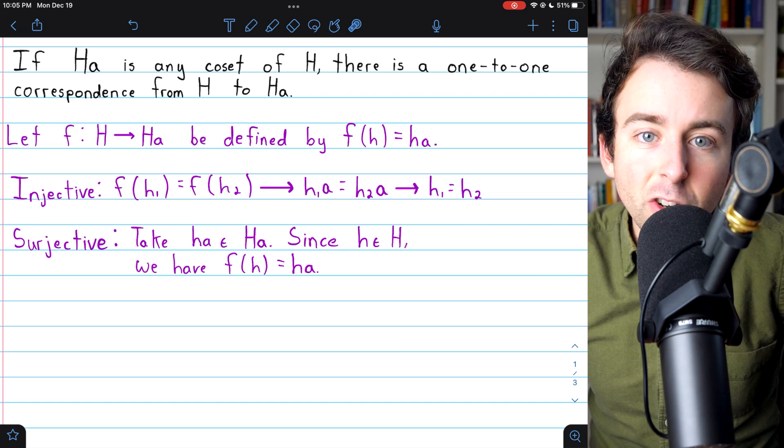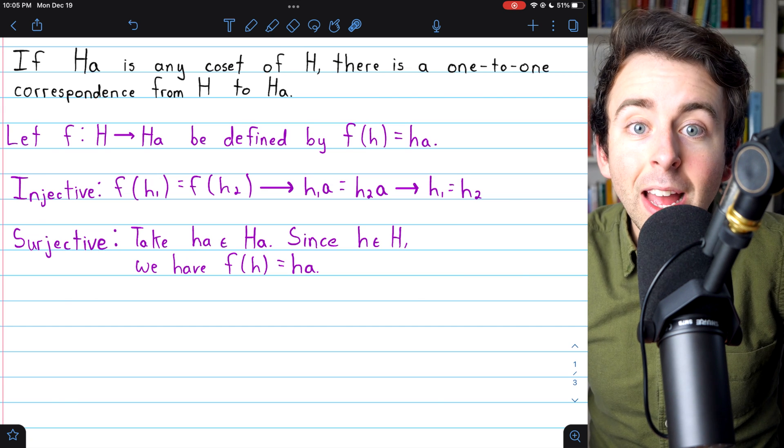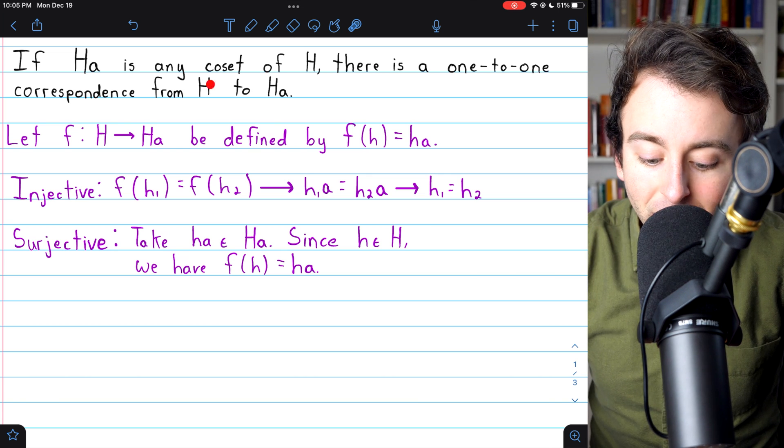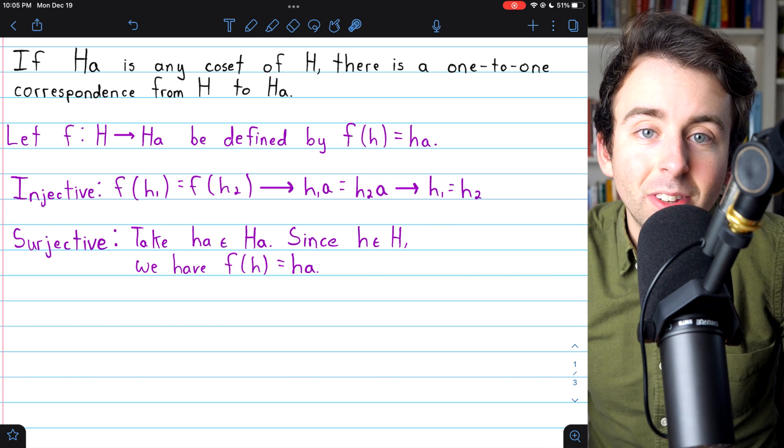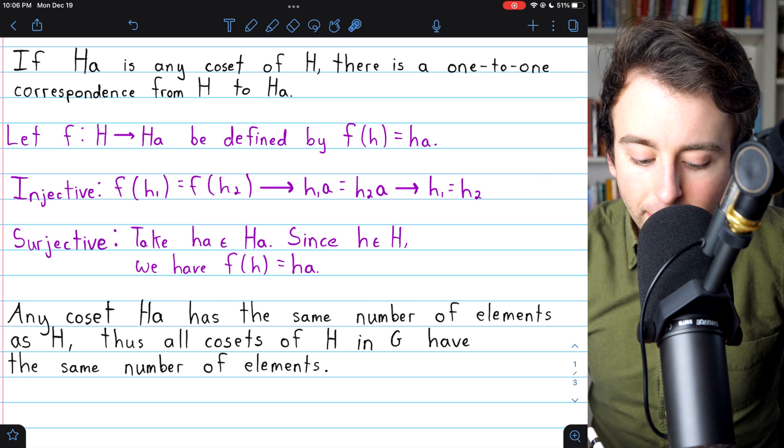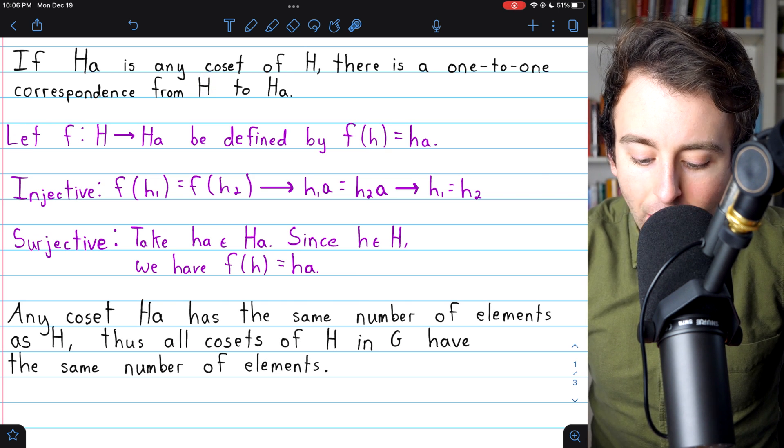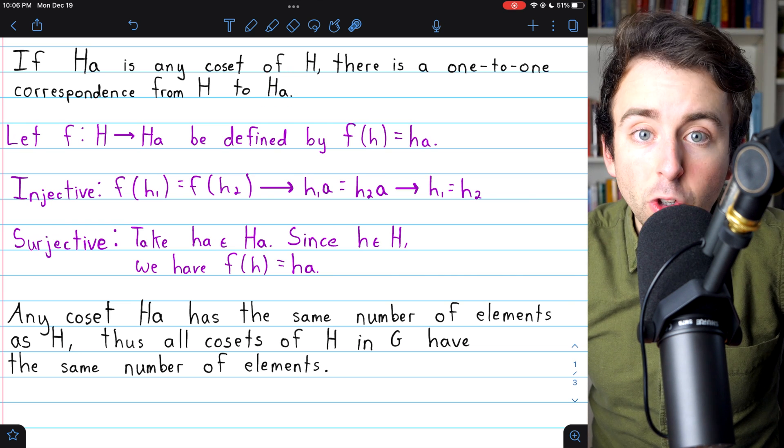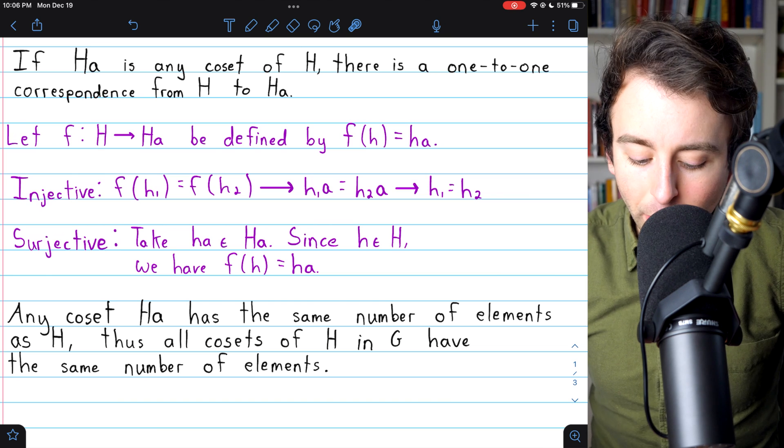We've proven that it's injective and surjective. So there is a one-to-one correspondence, a bijection, from the subgroup H to the coset HA. This means, by definition, that the cardinalities of the subgroup H and the arbitrary coset HA are equal. They do have the same size.